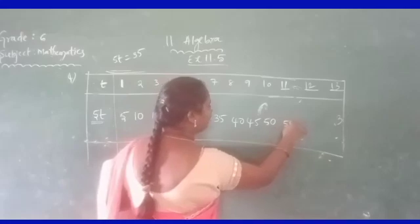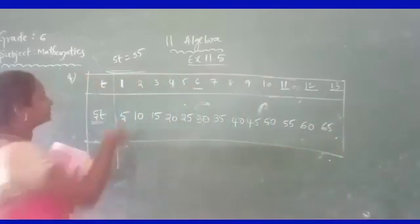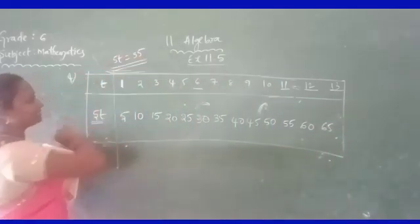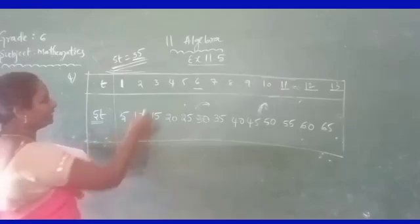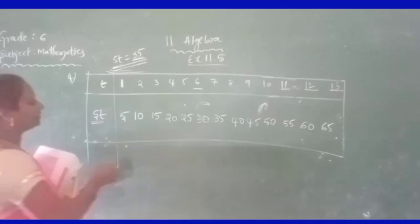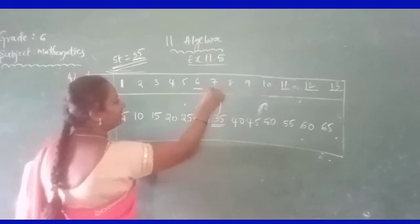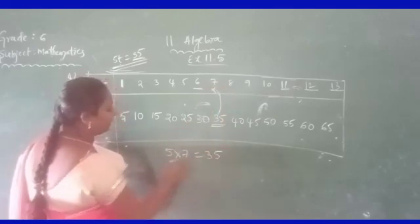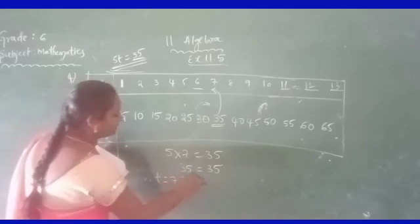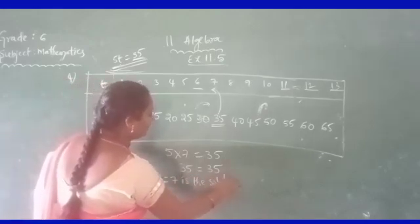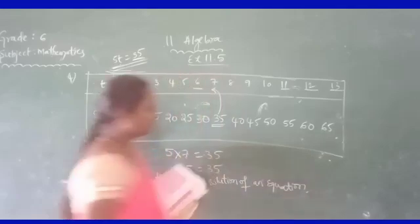Continuing the table: 5 times 10 is 50; 5 times 11 is 55; 5 times 12 is 60; 5 times 13 is 65. We want both left hand side and right hand side to equal 35. The value of the variable is 7, since 5 times 7 is 35, and 35 is equal to 35. Therefore, T equals 7 is the solution of the equation.